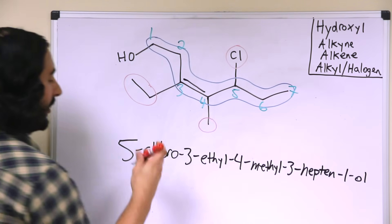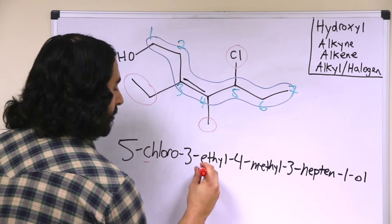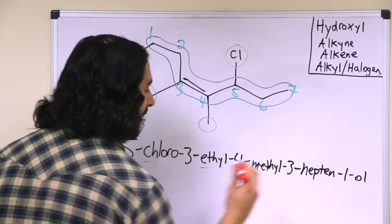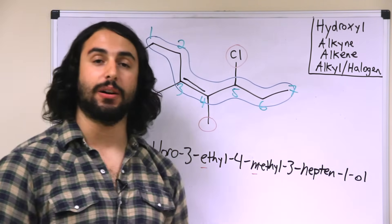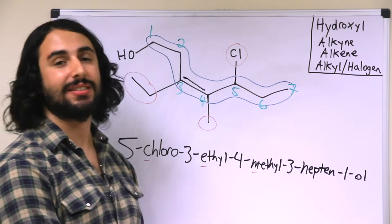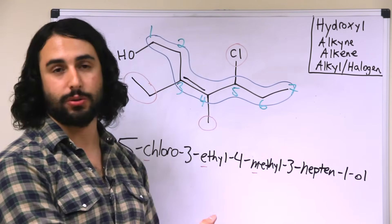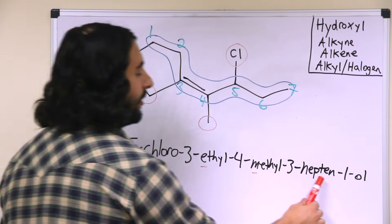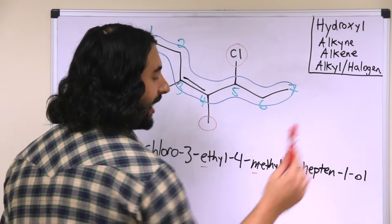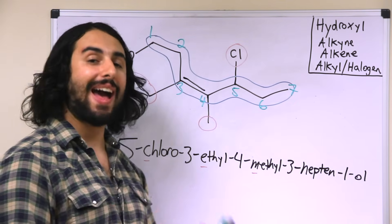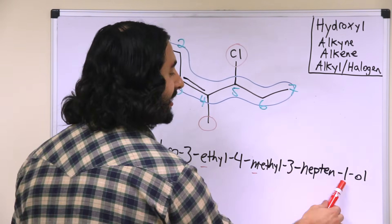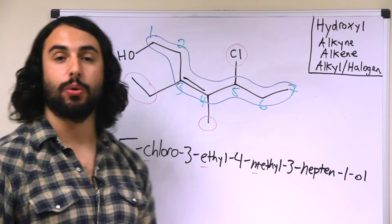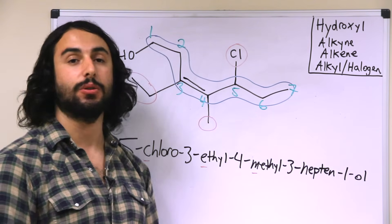So once again, the simpler substituents, your halogens and your alkyls go first in alphabetical order, and then always last, is or are the functional groups that are modifying the suffix of the molecule. In this case, the presence of the double bond and the hydroxyl, and we do have to list numbers indicating where they occur, otherwise it would be ambiguous as to their location on the molecule.